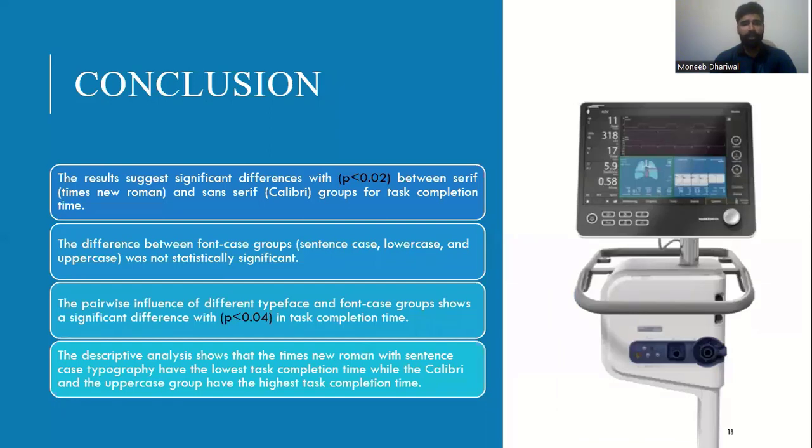In the conclusion, the result suggests significant difference with a p-value 0.02 between serif and sans serif groups in the task completion time. The difference between font case groups was not statistically significant. The pairwise influence of different typeface and font case group shows a significant difference with p-value 0.04 in task completion time. The descriptive statistics shows that the Times New Roman with sentence case typography have the lowest task completion time, while the Calibri with the upper case group have the highest task completion time.